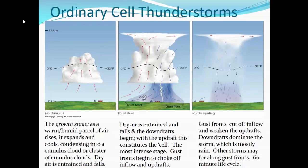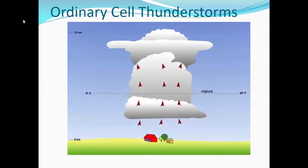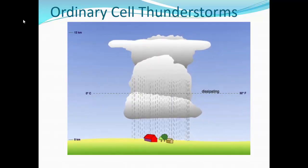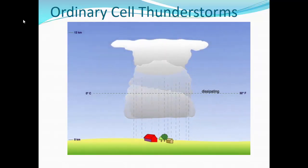As dry air begins to be pulled into that cumulus cloud, we move into the mature stage. That dry air is entrained and falls, and the downdraft begins — with that downdraft comes the rain. When you have both the downdraft and the updraft, it constitutes a cell. Gust fronts — the cold air spreading out from the surface — begin to choke off the inflow and the updraft. Once the gust front completely cuts off the inflow and weakens the updraft, downdrafts dominate and the storm becomes mostly rain. That whole cycle takes about 60 minutes. That is an air mass thunderstorm, an ordinary cell thunderstorm.